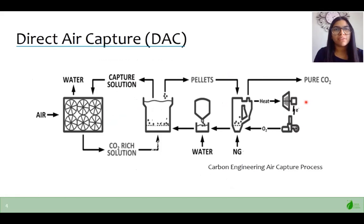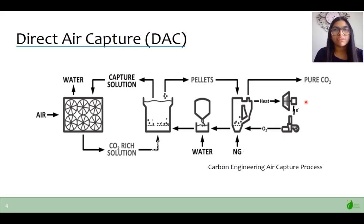In other words, this process is capable of mitigating climate change by directly removing historical emissions from the atmosphere. The concentration of carbon dioxide in the air is very dilute, just around 400 to 500 parts per million. That means the direct air capture method must be able to overcome the limited concentration while still meeting the design specifications. To do that, we are using the process of chemical absorption to separate carbon dioxide from the air.